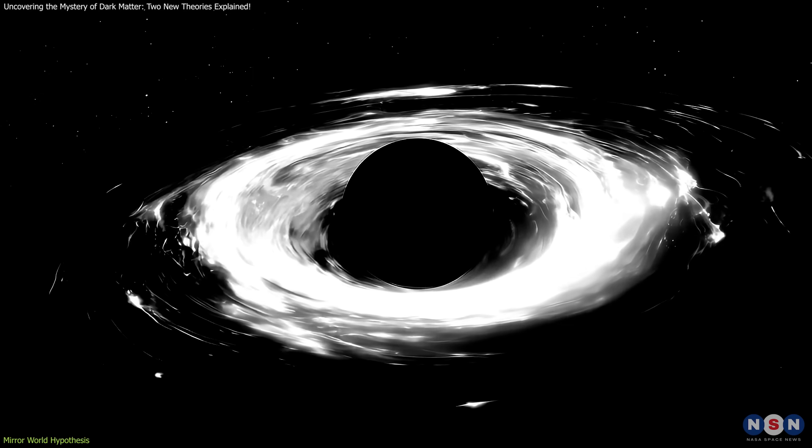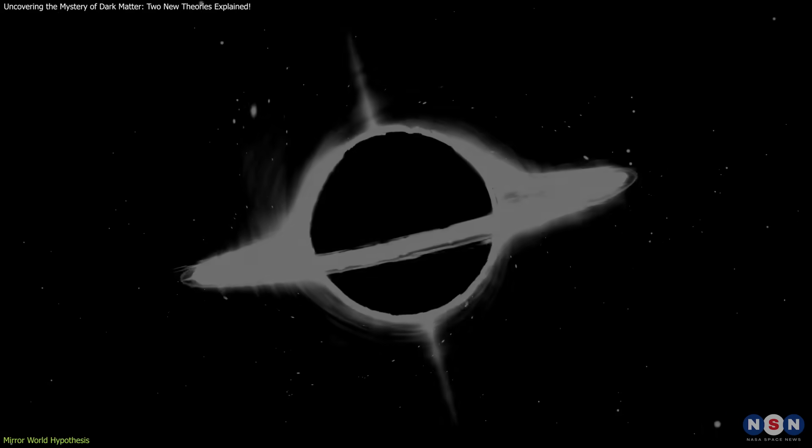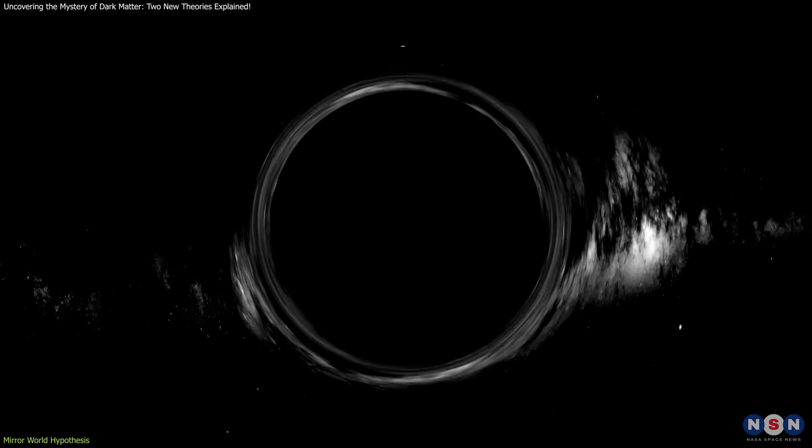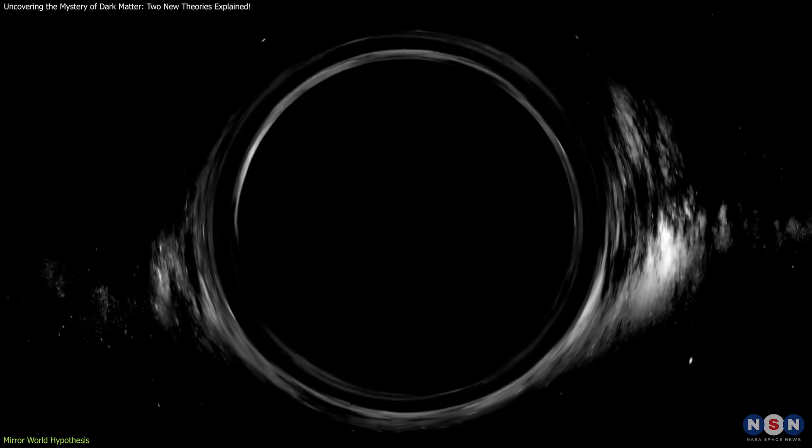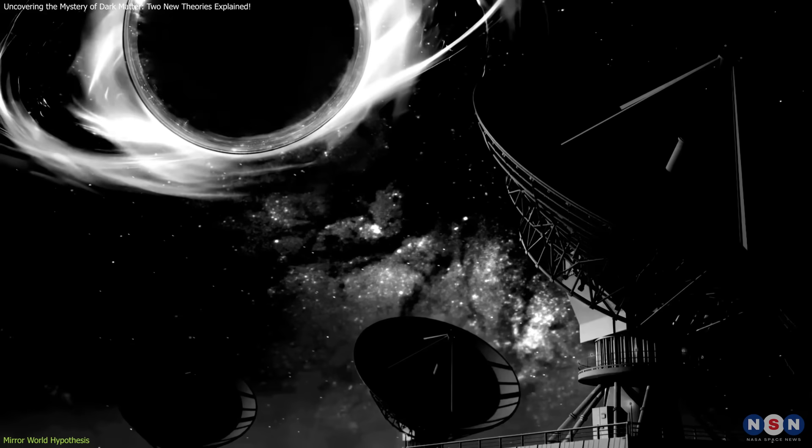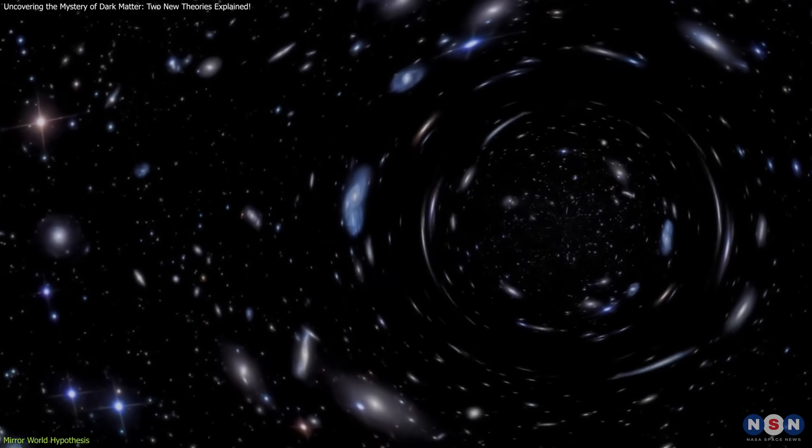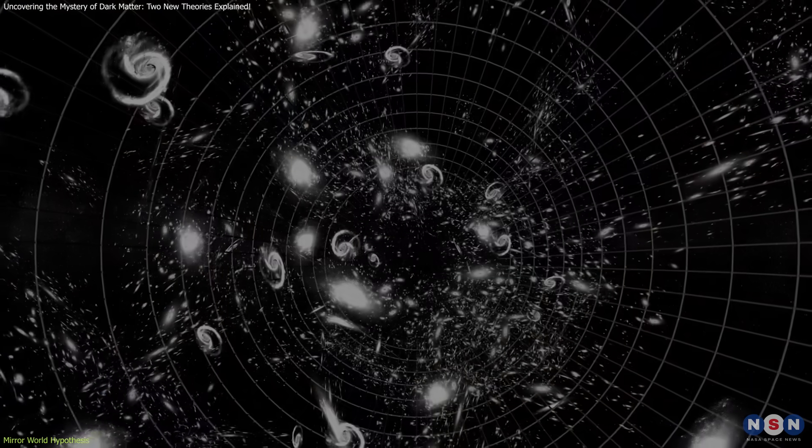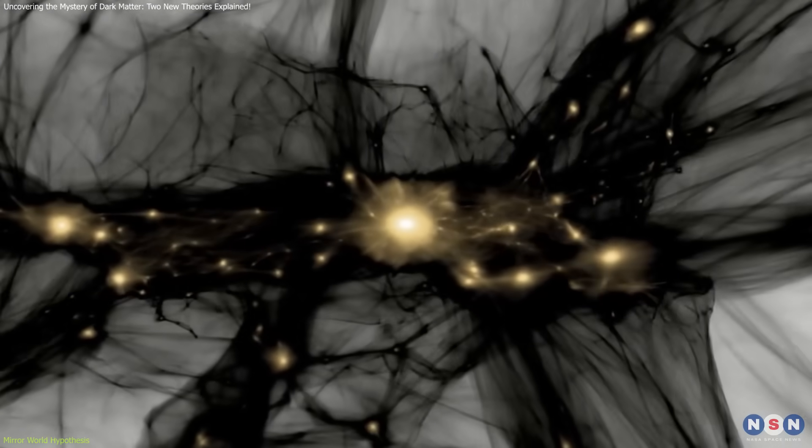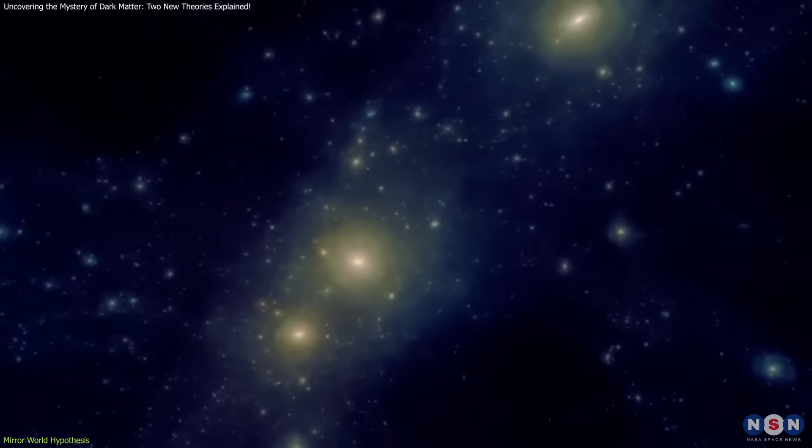These objects would behave like black holes, but would be invisible to traditional particle detectors, since they would not emit light or interact with electromagnetic radiation. The key idea here is that these dark objects would only interact through gravity. While they would be undetectable through conventional means, their gravitational influence could explain the effects we see in the universe, like the rotation of galaxies and the movement of galaxy clusters. This could account for the dark matter that binds galaxies together, while leaving no trace of its existence in terms of detectable particles.